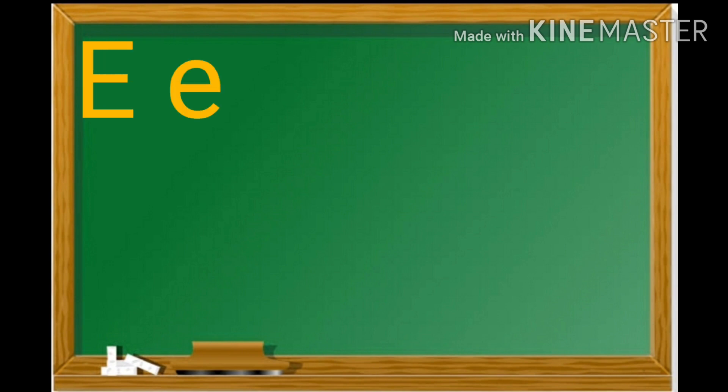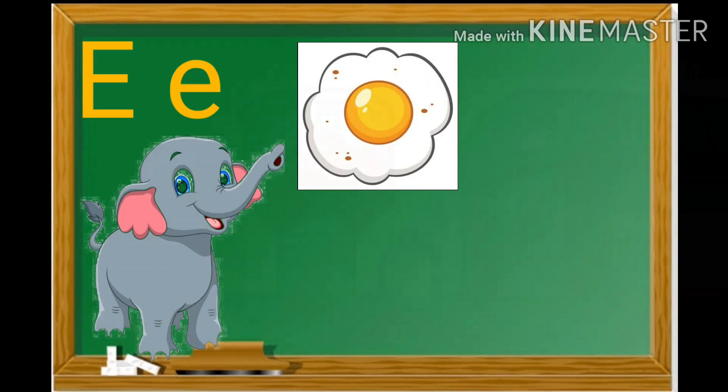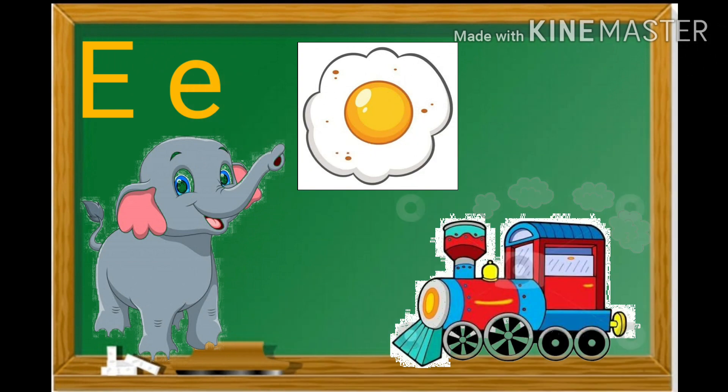Next letter is E. Mama E and Baby E. Sound of E is A. Say with me. A. Egg. A. Elephant. A. Engine.